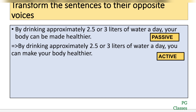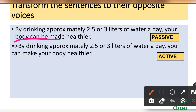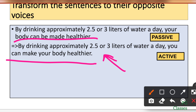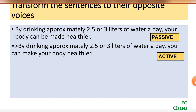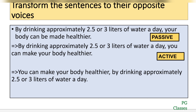The active forms of this sentence are: 'By drinking approximately 2.543 liters of water a day, you can make your body healthier' — here the doer 'you' is emphasized. Alternatively: 'You can make your body healthier by drinking approximately 2.543 liters of water a day.' Both are valid active forms. The difference between the passive and active is that the passive focuses on the body being made healthier, while the active focuses on the doer performing the action.